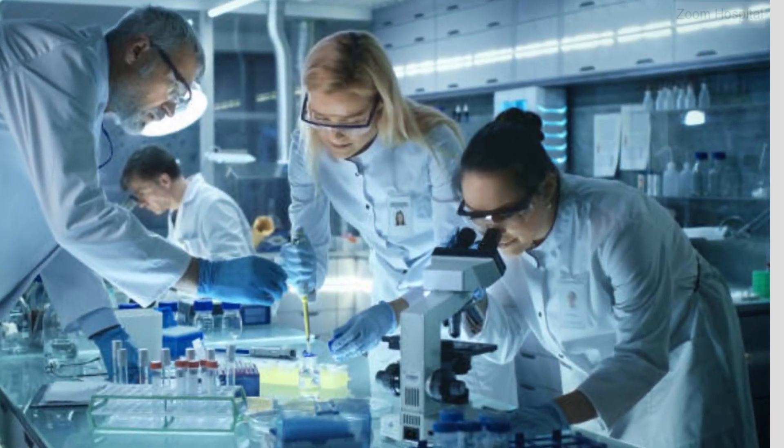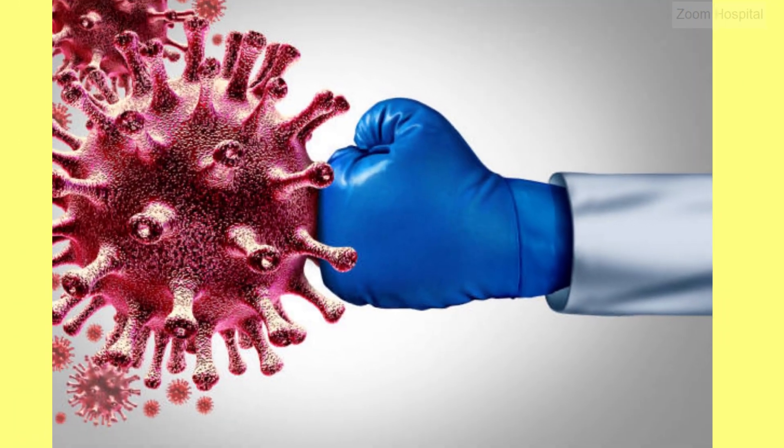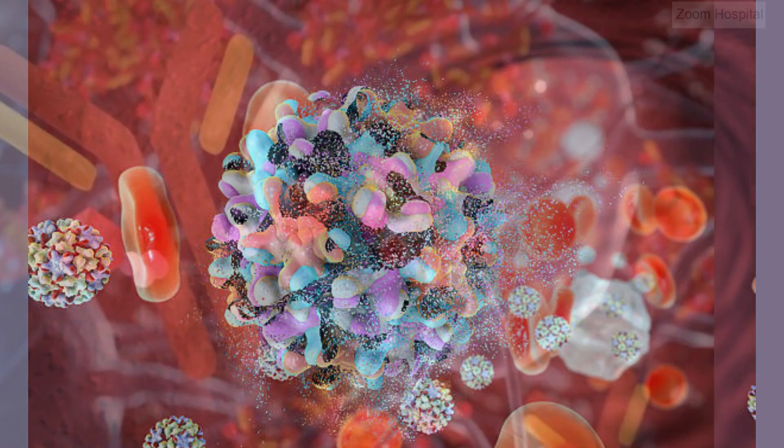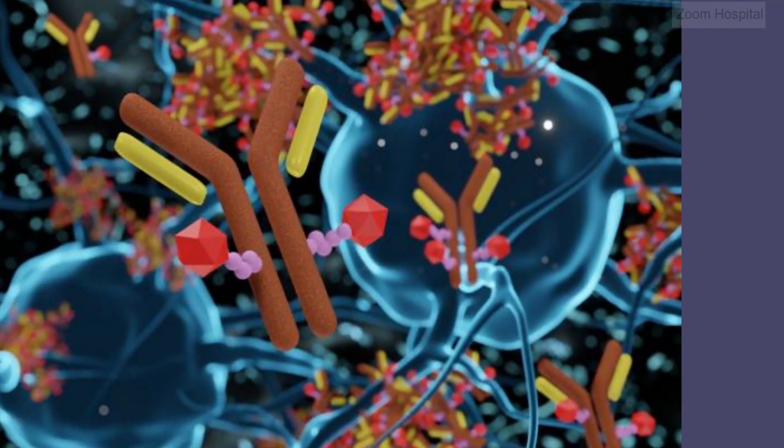1. Complete viral eradication. A genuine cure for HIV must aim for the complete eradication of the virus from the body. This means eliminating all traces of HIV, including dormant reservoirs that evade detection by the immune system and current treatments.